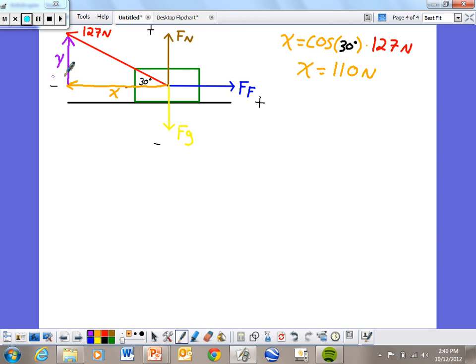Now solving for y, y is right here, is the opposite side. Because it's the opposite side, it's going to use sine of the angle, 30 degrees, and it's multiplied by our hypotenuse as well, which is 127 newtons. We can plug all that stuff into our calculator, and when we do, we would get that y is 63.5 newtons.